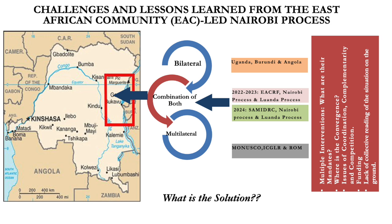Operating in the DRC, we find that much as the East African-led process initially looked effective, we are operating in an environment where there are bilateral arrangements — Uganda, Burundi, and Angola have bilateral security arrangements with the DR Congo. Then we have multilateral arrangements in the form of MONUSCO, ICGLR, and the Regional Oversight Mechanism. In 2022–2023, we deployed the East African Regional Force and simultaneously the Nairobi process commenced alongside the Luanda process.